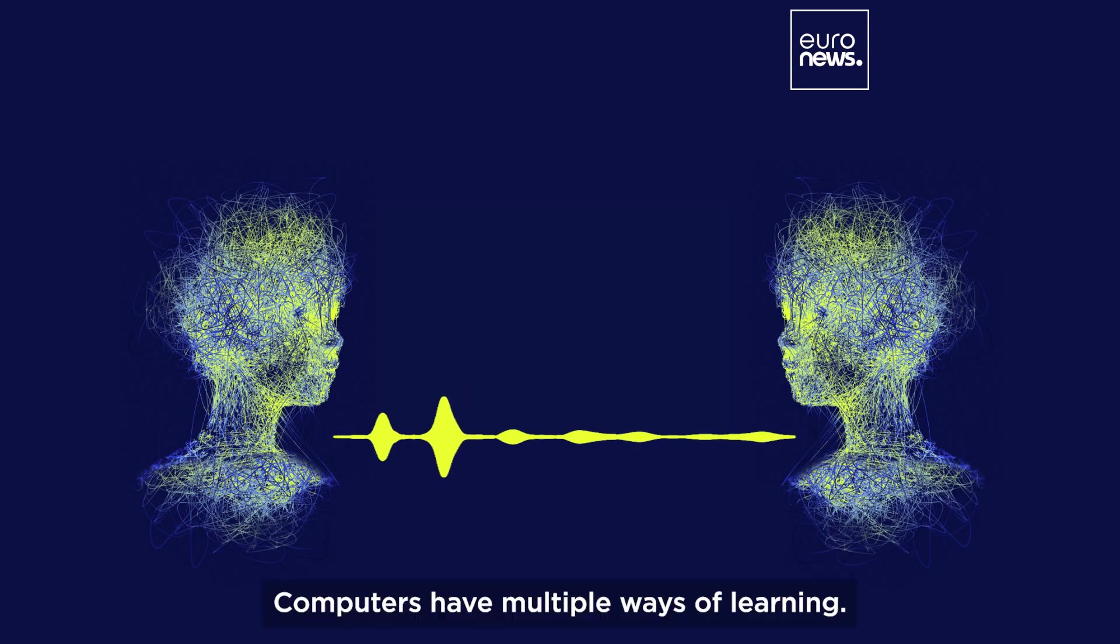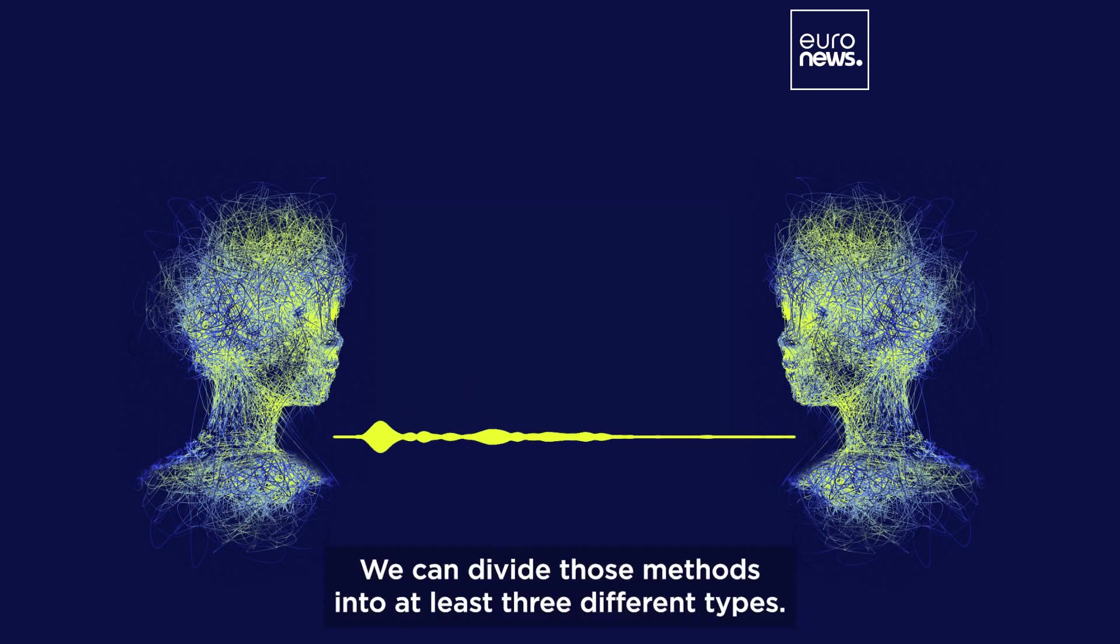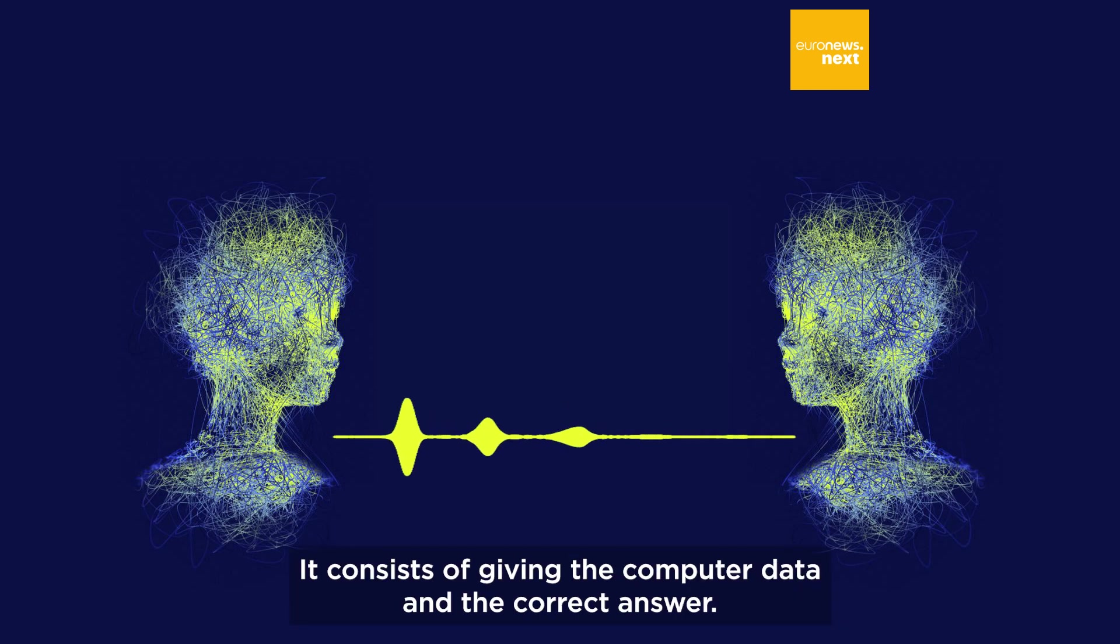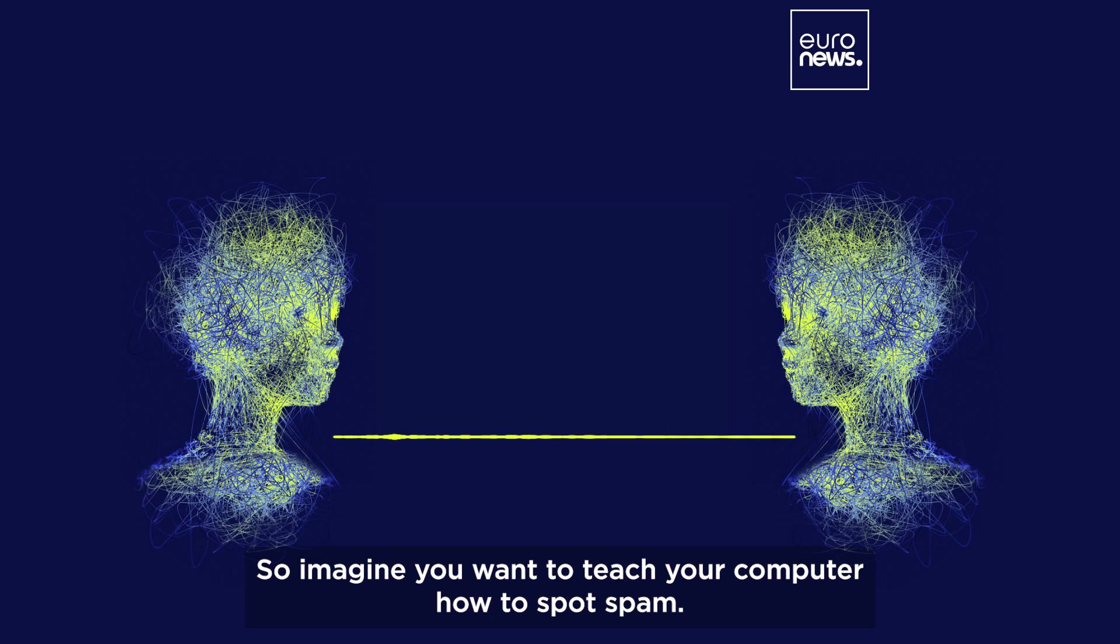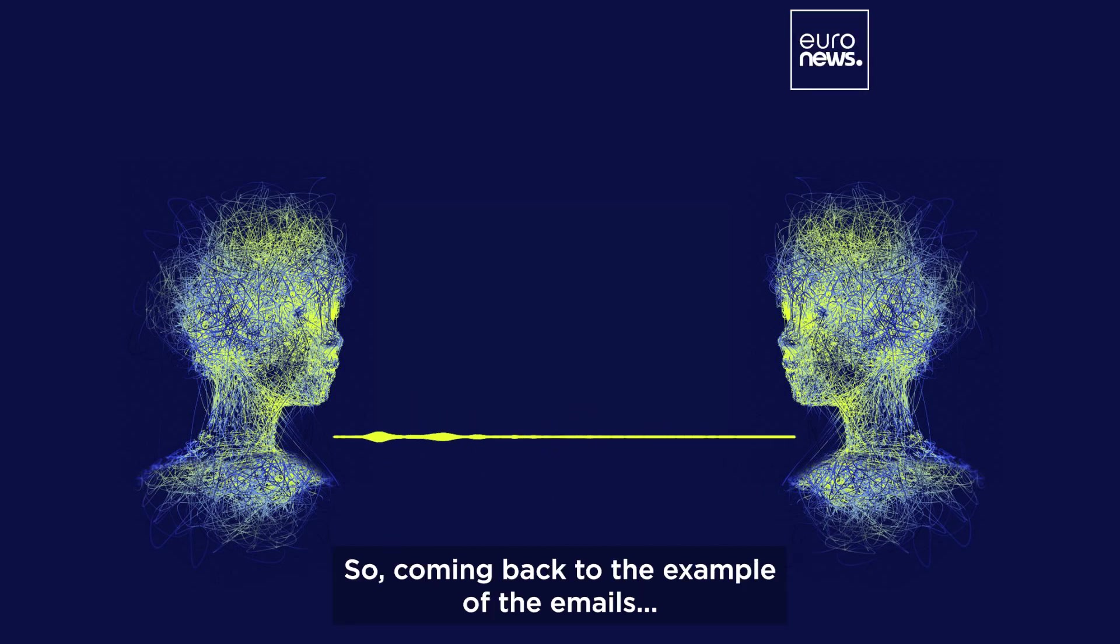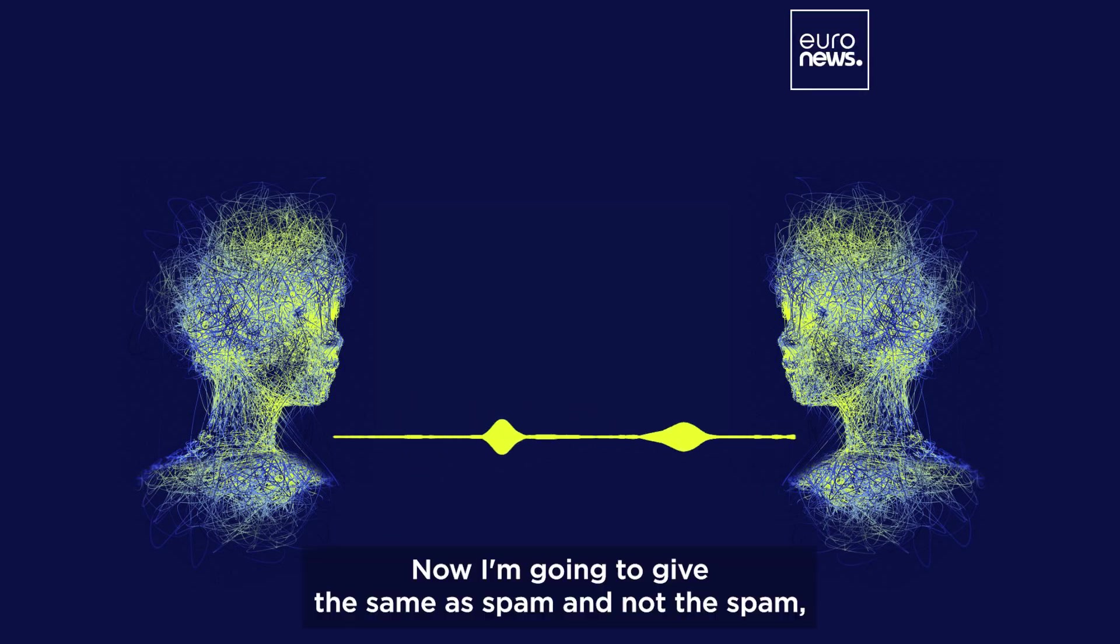Computers have multiple ways of learning. We can divide those methods into at least three different types. The first is supervised learning. It consists of giving the computer data and the correct answer. So imagine you want to teach your computer how to spot spam. I'm going to tell the computer: this one is spam, this one is not spam, this one is spam. Then there's another way of learning that's unsupervised.